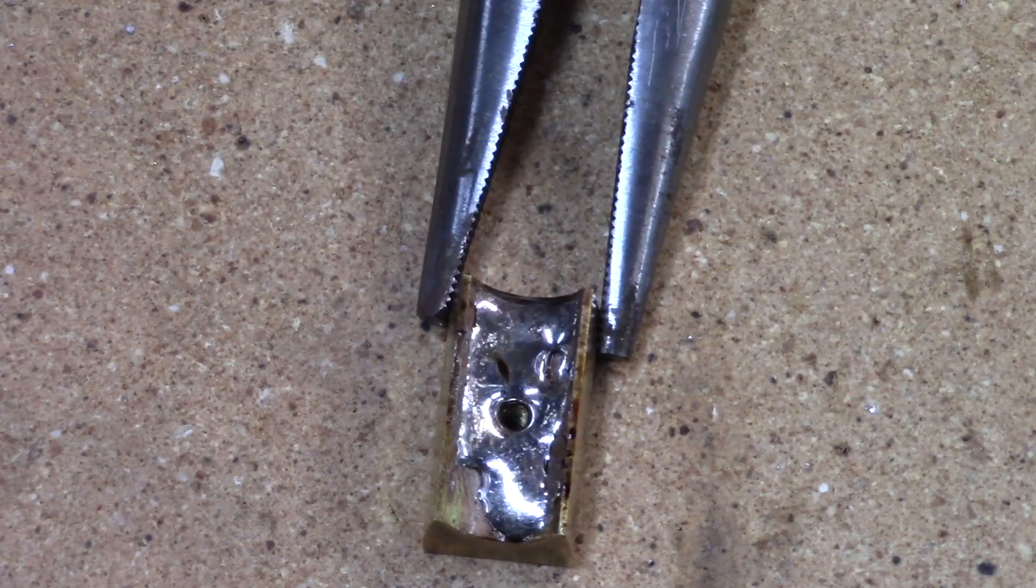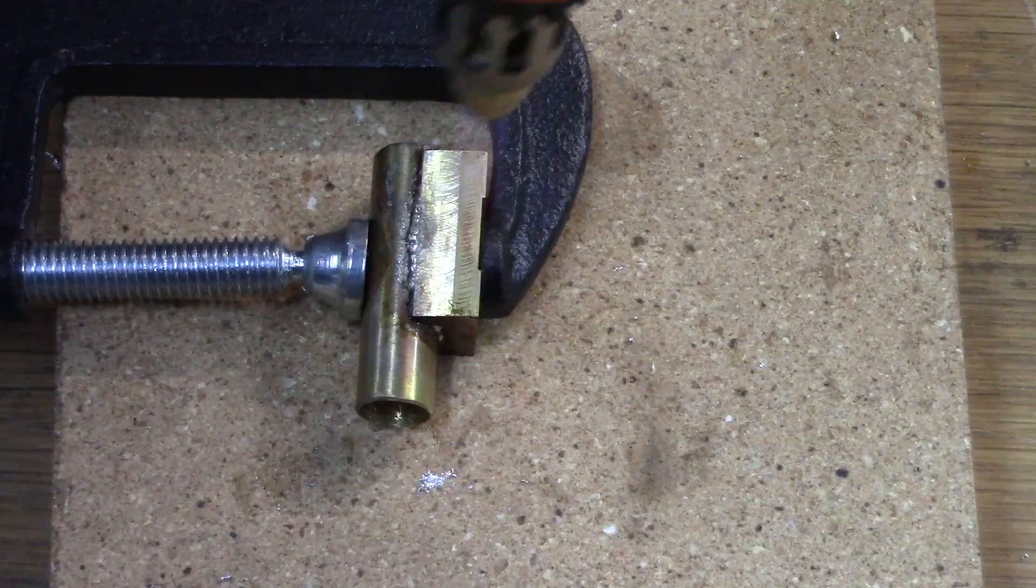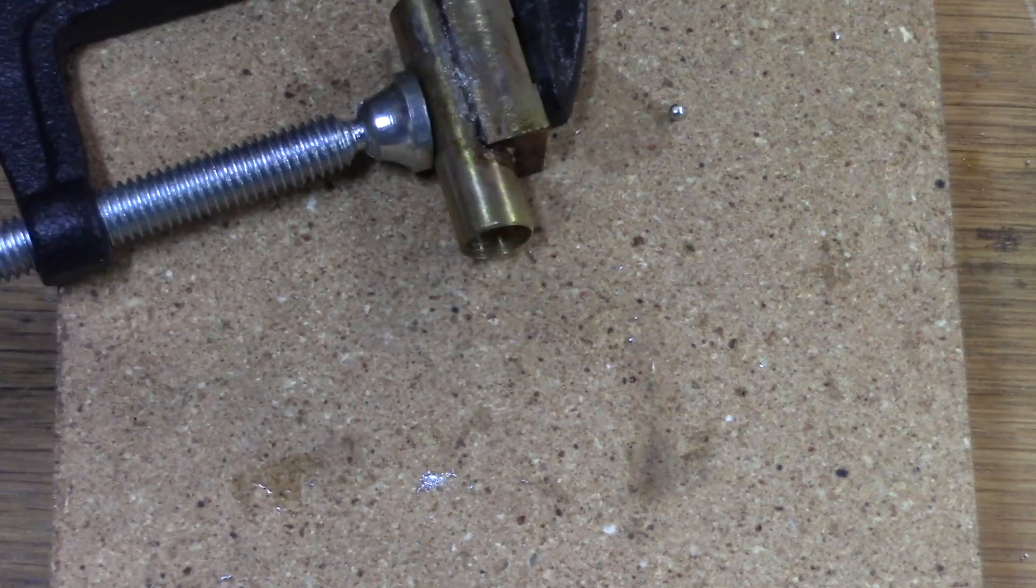The recess in the cylinder block is tinned and then soldered to the cylinder.